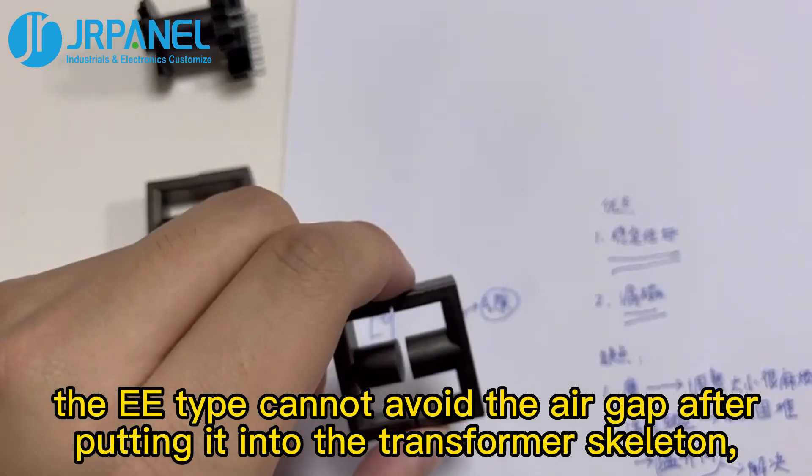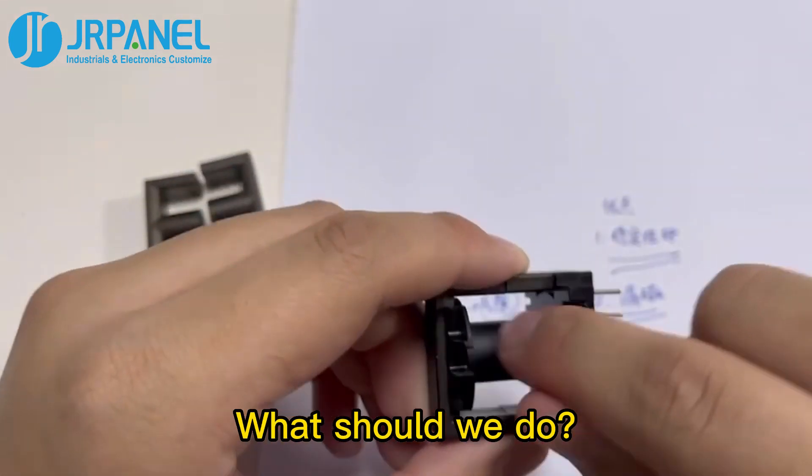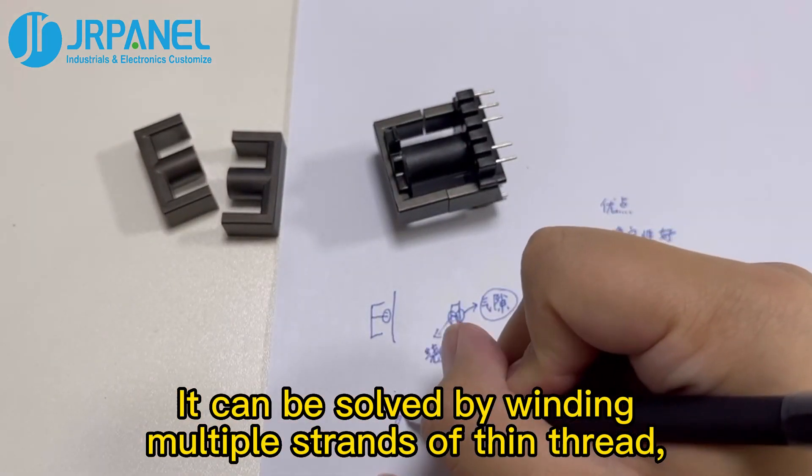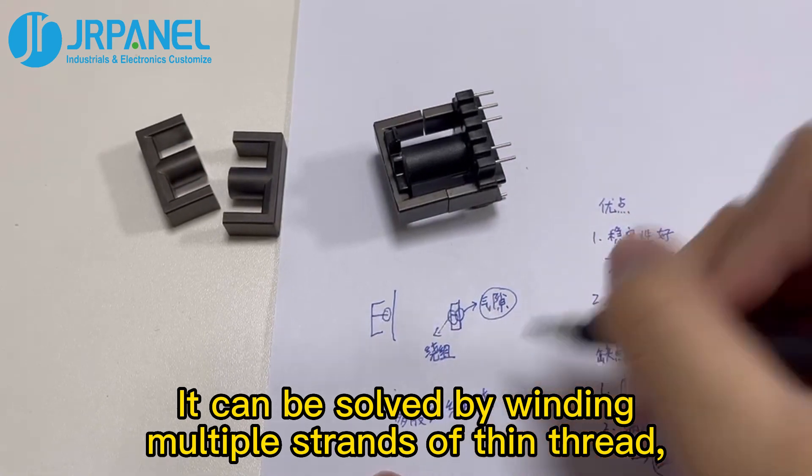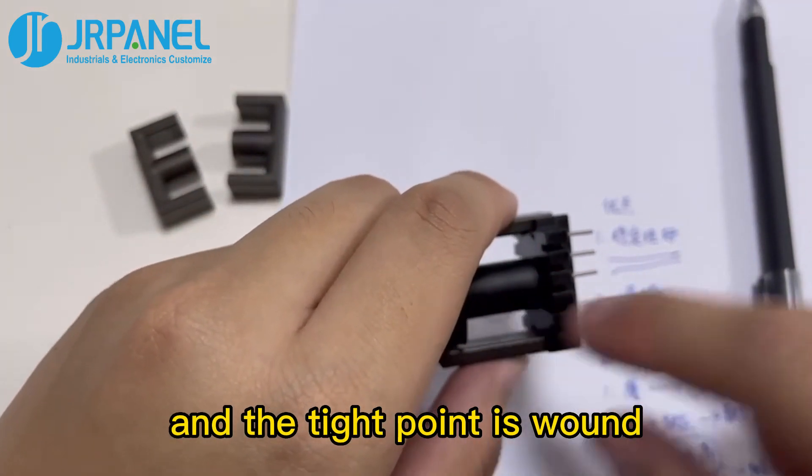However, the E-Type cannot avoid the air gap after putting it into the transformer skeleton. What should we do? It can be solved by winding multiple strands of thin thread. That is to say, a thin thread is used in the middle, then the tight point is wound.